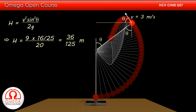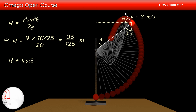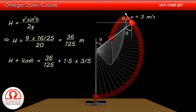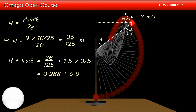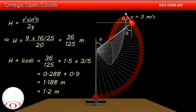This height is the height reached by the particle above the point where the string becomes slack. Therefore, the maximum height reached by the particle above the point of suspension is H + L cos theta. Putting the values, we get maximum height = 36/125 + 1.5 × (3/5). Simplifying, we get 1.188, which rounds to 1.2 meters. This is the answer to part C of the question.